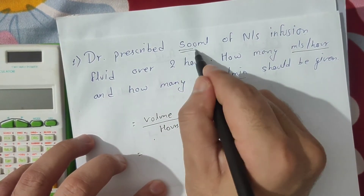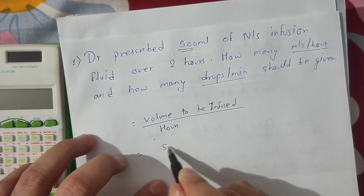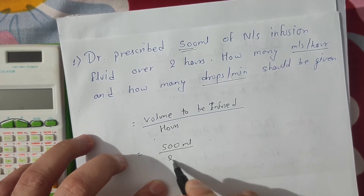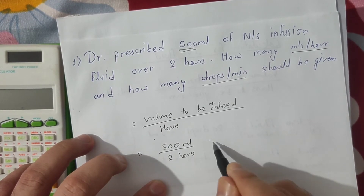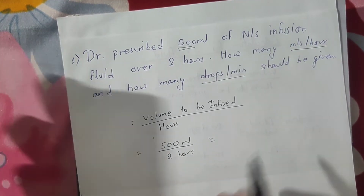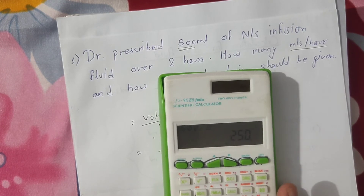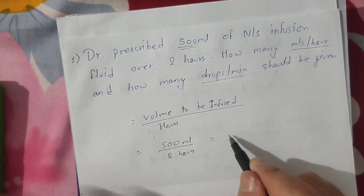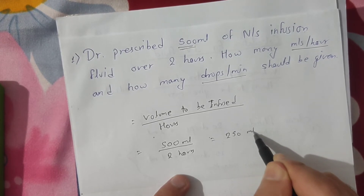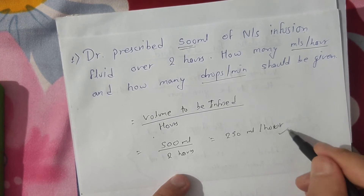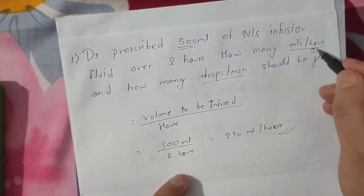The volume is 500 ml to be given over 2 hours. So if we divide 500 by 2, we get 250. The answer to the first part is 250 milliliters per hour.